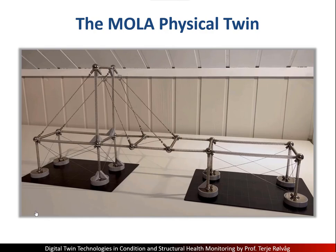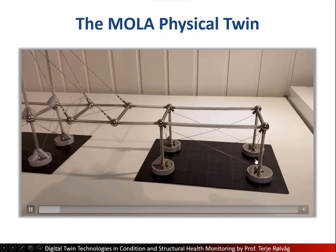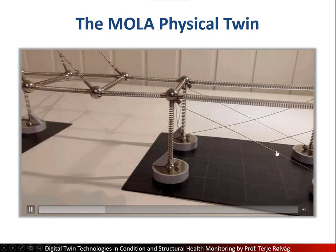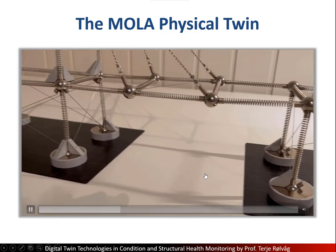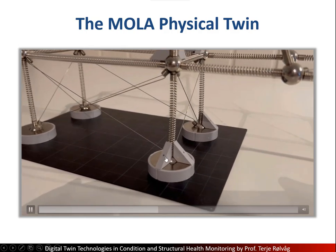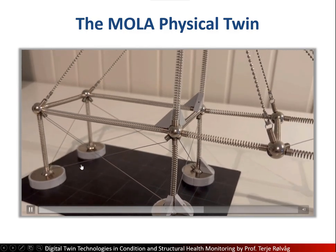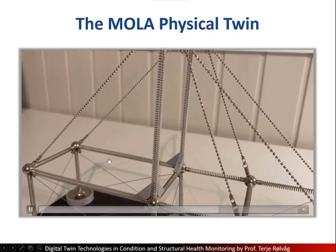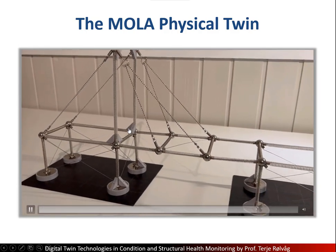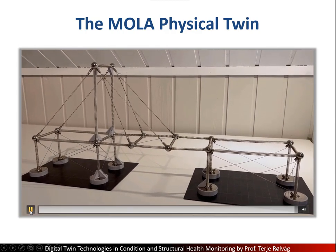This is a short movie presenting my Moola model. These are the supports which are magnets, the short beams, the diagonals, the RC90 clamps or magnets used to constrain the beams. These plates are also used to keep the bridge well positioned. And here you see I've used plastic tubes to stiffen the long bar elements. So this is my model, the physical twin.